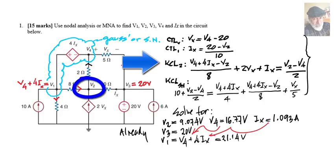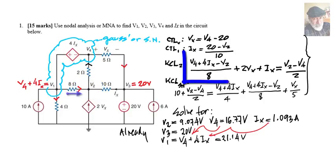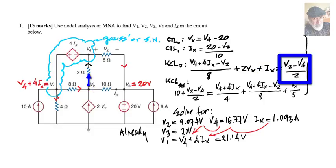And we write KCL2 for the node right there in the center. That is currents arriving in it is the voltage on this side V4 plus 4IX minus V2 divided by 8 ohms, plus the current flowing from the bottom through this controlled current source and that is 2 times VX, plus the current IX. And that is equal to currents leaving the node which is V2 minus V4 over 2.